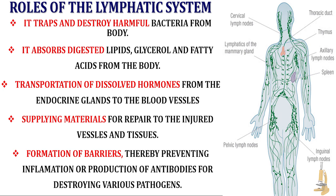The lymphatic system also absorbs digested lipids, glycerol, and fatty acids from the body. It facilitates the transportation of dissolved hormones from the endocrine glands of the brain to all the blood vessels in the body. It also supplies materials for the repair of injured tissues and body vessels. Additionally, it forms barriers that prevent inflammation and produces antibodies for destroying various pathogens in the body.